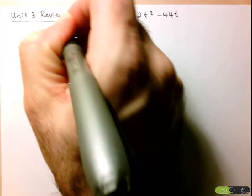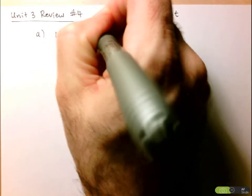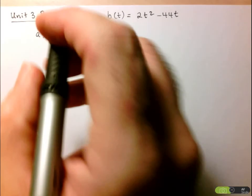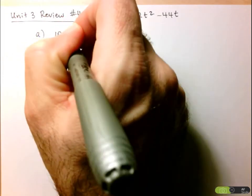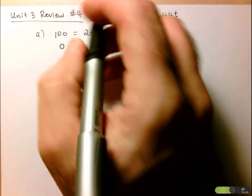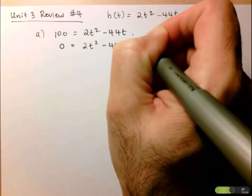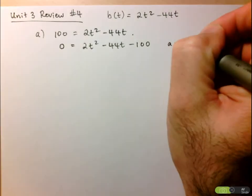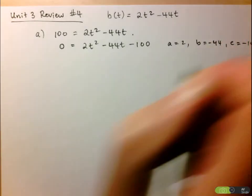For part A, I'm going to replace B by 100. That leaves us with 2t² minus 44t, and we're left with a quadratic equation. To solve a quadratic equation we use the quadratic formula, so we need zero on one side — I'll move 100 to the other side, so that becomes minus 100. So here we have A equals 2, B equals negative 44, and C equals negative 100.